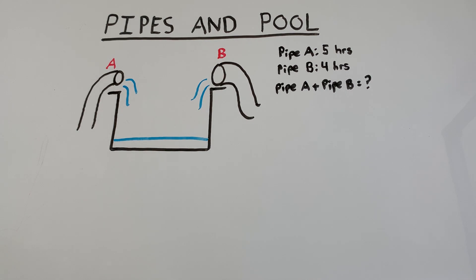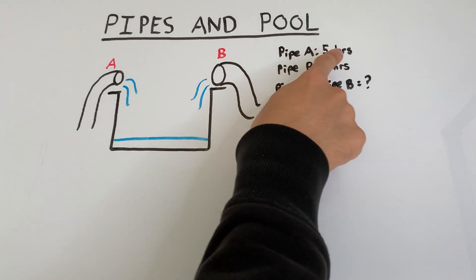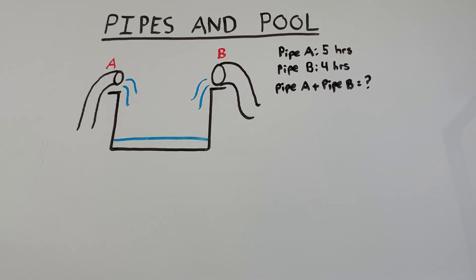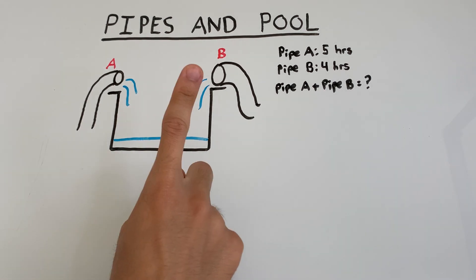So what we're gonna do is focus on each pipe individually at first. Let's take a look at pipe A first. If pipe A takes five hours to fill the pool on its own, let's see how much of the pool it fills up in one hour.